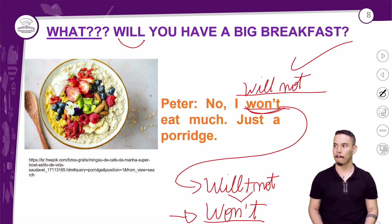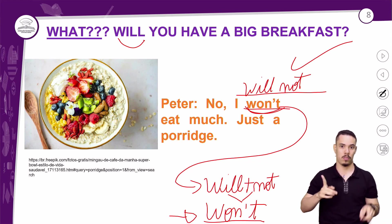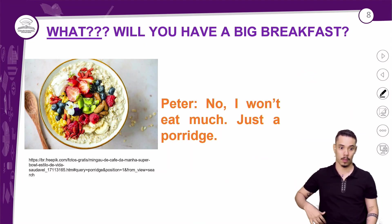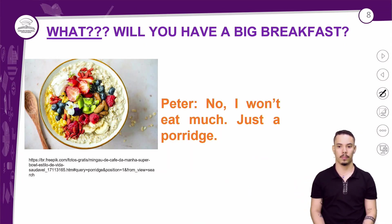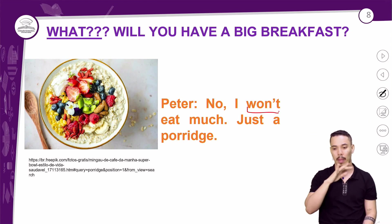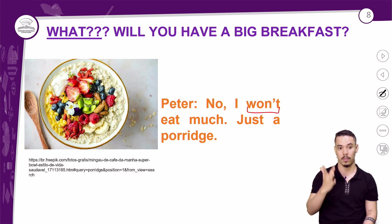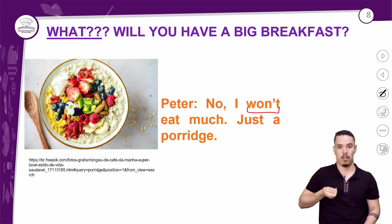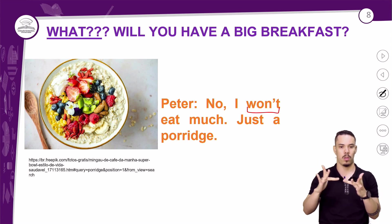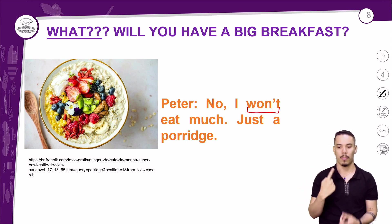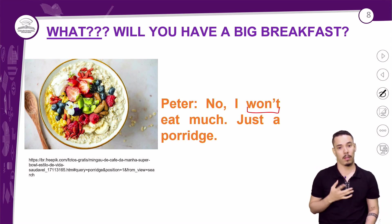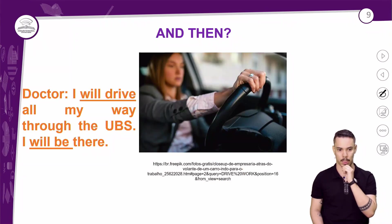So: 'No, I will not eat much' — ok. 'No, I won't eat much' — also ok, but informal. It's also easier to say 'won't.' Try saying 'will not' versus 'won't' — 'won't' comes out much more naturally. Next question, now about the doctor: after his protein shake, 'And then?' — and then what? The doctor says: 'I will drive all my way to the UBS. I will be there.'